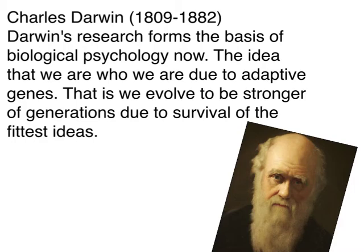Charles Darwin came up with evolutionary theory, and we use evolutionary psychology within the biological explanations. What we're looking for here is adaptive genetics — survival of the fittest. The idea is that we may have instincts to fear certain things because our ancestors feared them for survival, and that's imprinted within us determining our behavior. There's not a lot of free will with evolutionary psychology because we're controlled by internal mechanisms.